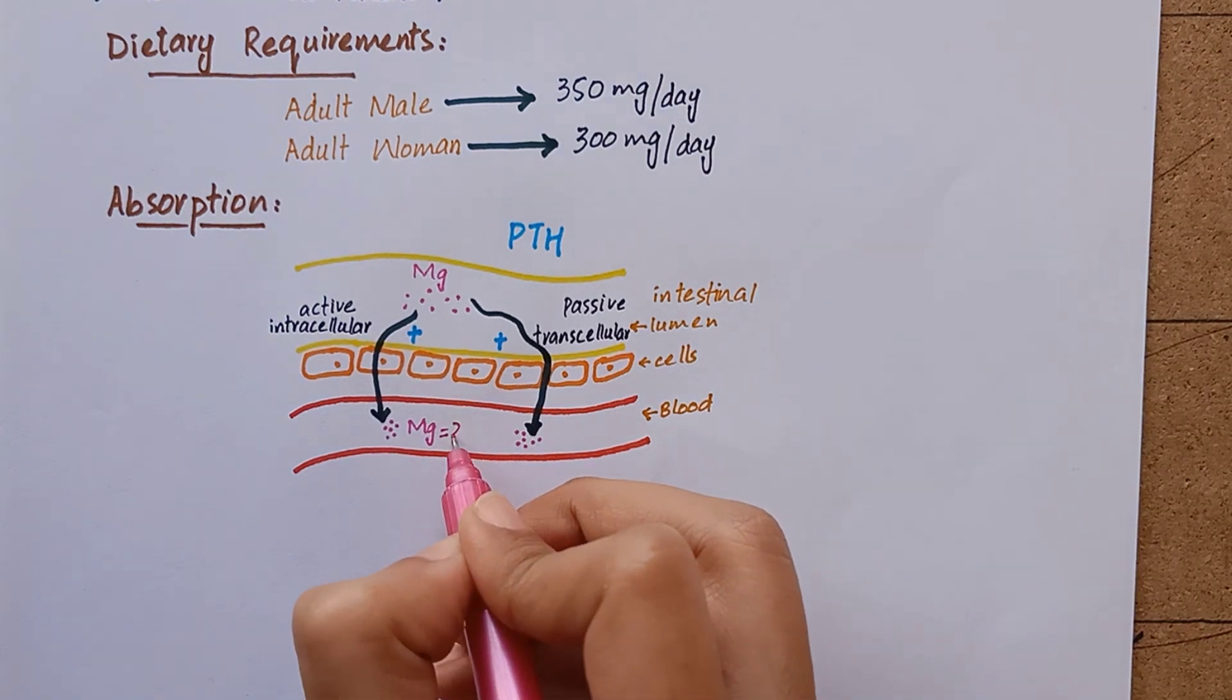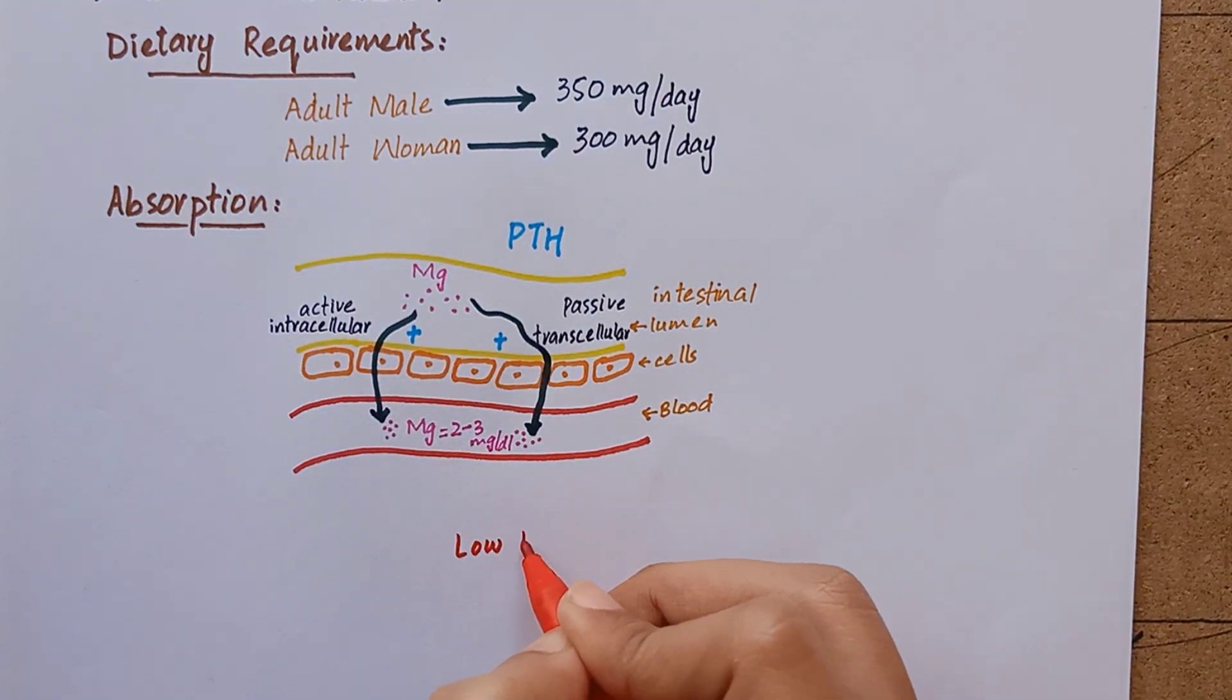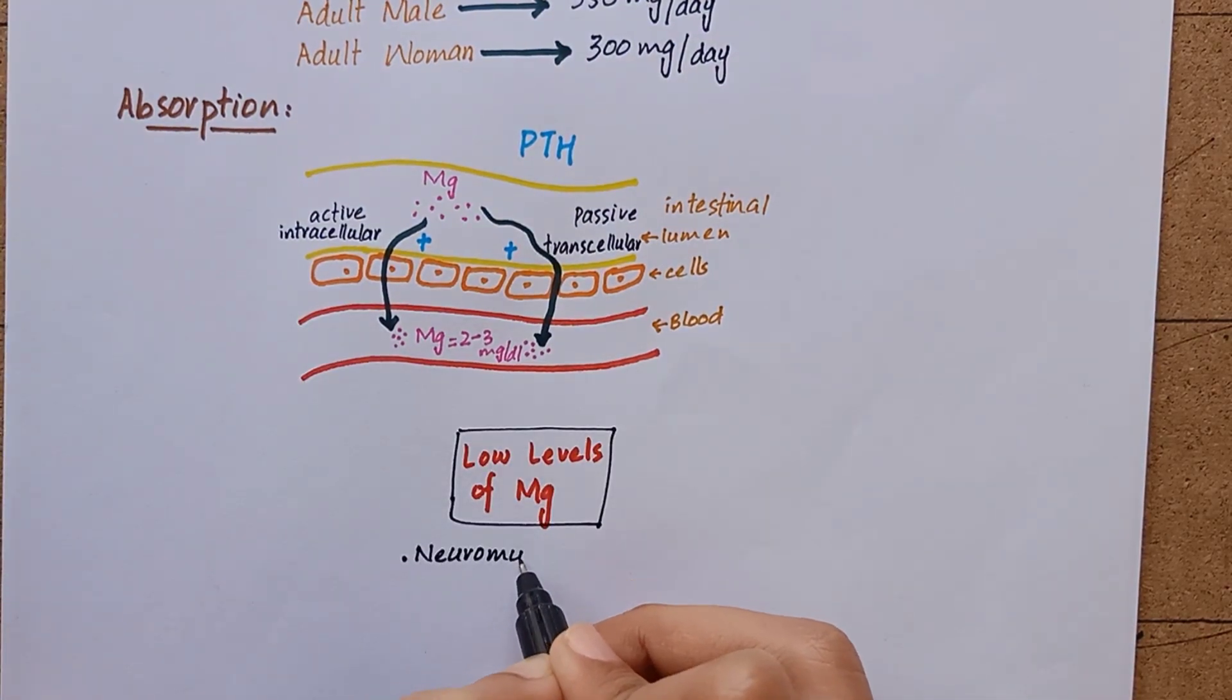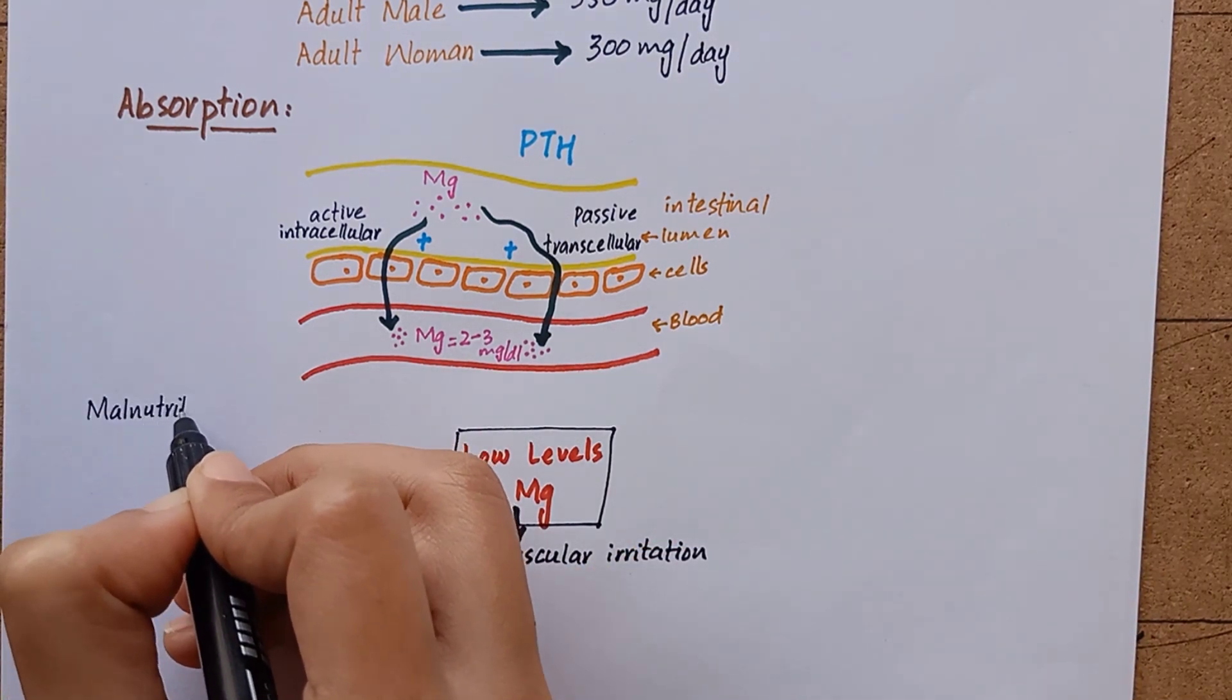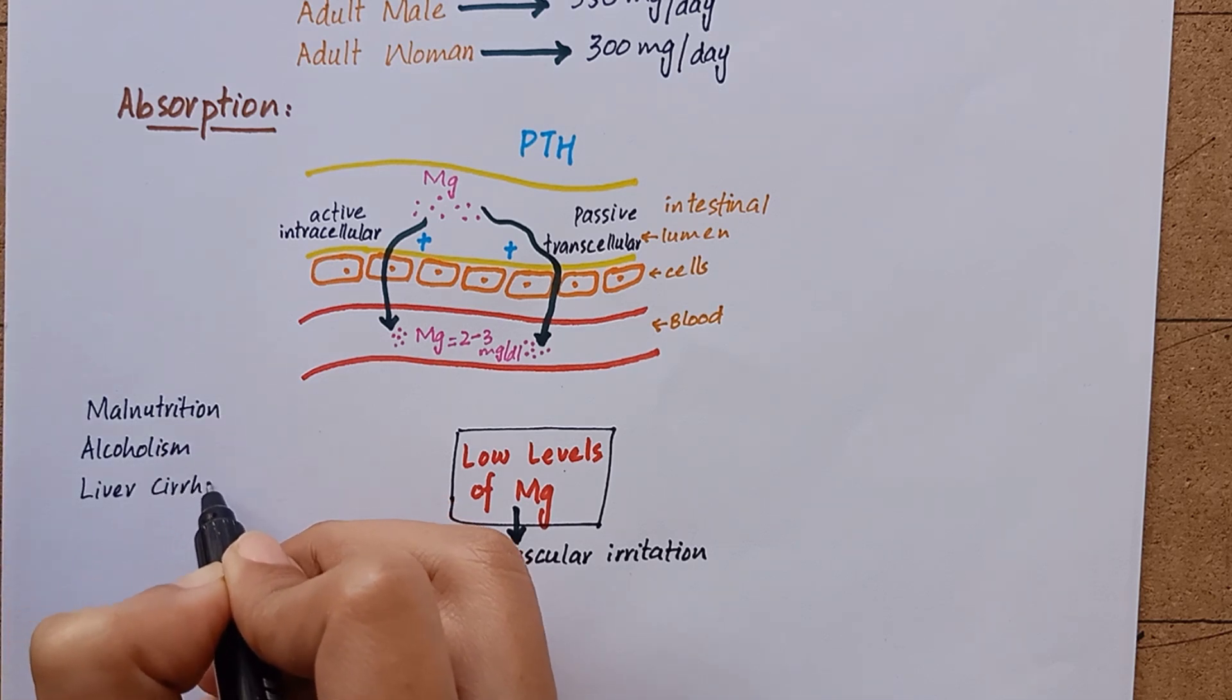Abnormally low levels of magnesium can cause neuromuscular irritation, weakness, and convulsions, while malnutrition, alcoholism, and cirrhosis of liver can lead to magnesium deficiency.